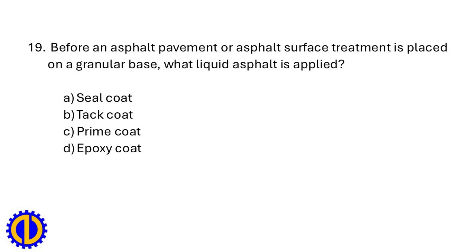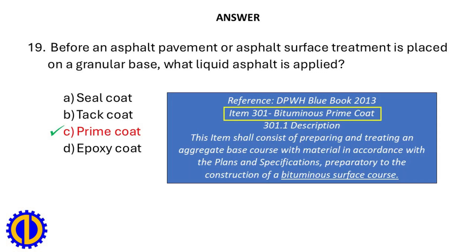Before an asphalt pavement or asphalt surface treatment is placed on a granular base, what liquid asphalt is applied? a. Seal coat, b. Tack coat, c. Prime coat, d. Epoxy coat. Answer: c. Prime coat. Reference: Blue Book 2013 Item 301 Bituminous Prime Coat — this item consists of preparing and treating an aggregate base course preparatory to the construction of a bituminous surface course.